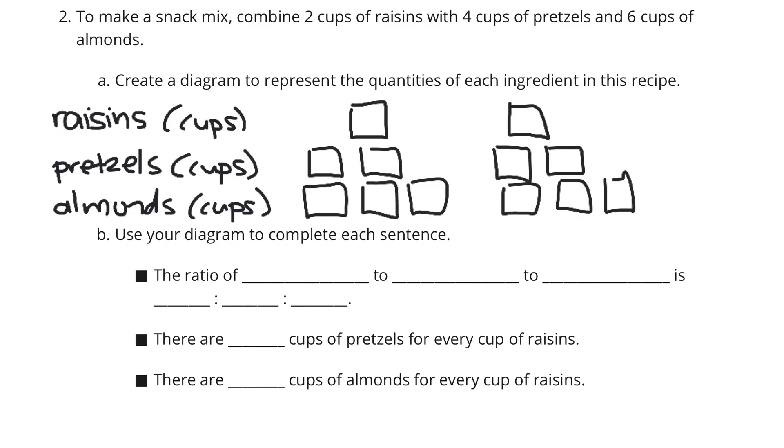And so, let's just go in order to complete the sentences now. Now, the ratio of raisins to pretzels to almonds is 2 to 4 to 6.